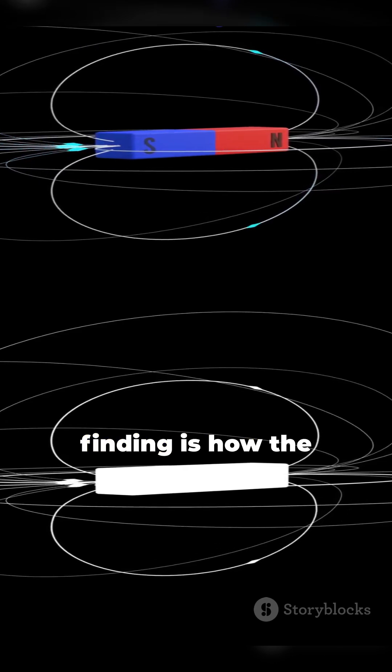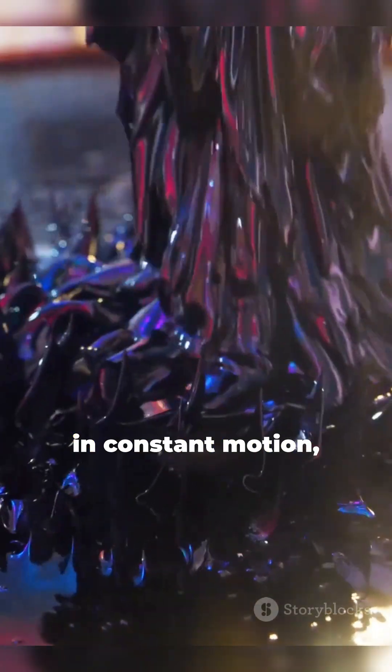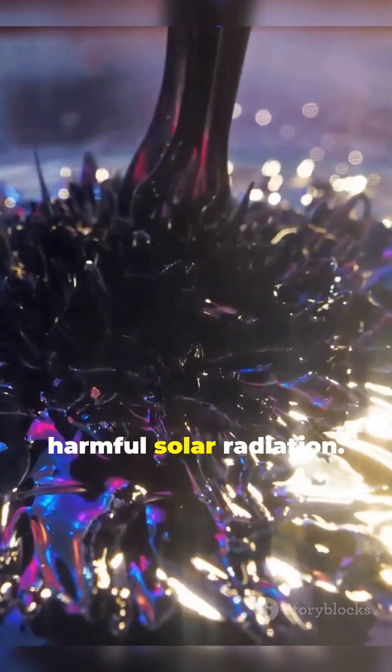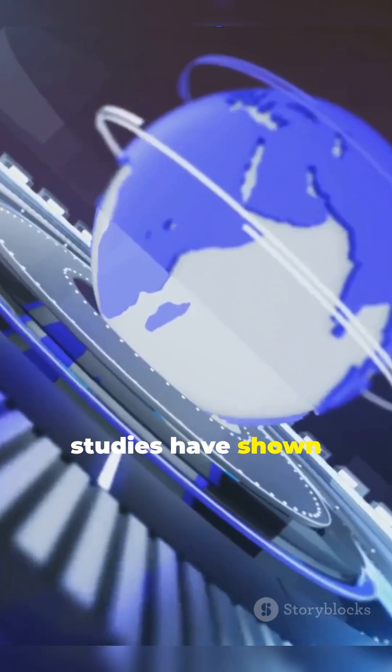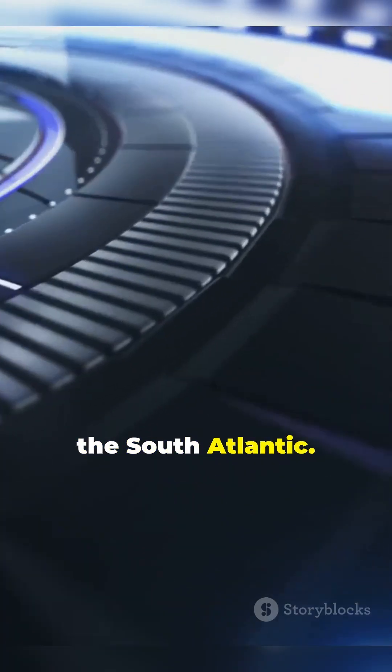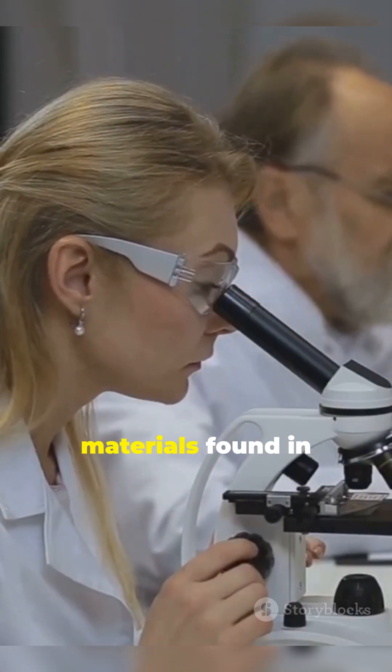Another groundbreaking finding is how the core impacts Earth's magnetic field. The liquid outer core, in constant motion, acts like a massive dynamo, generating the magnetic field that protects us from harmful solar radiation. However, studies have shown that the magnetic field is weakening in certain regions, particularly over the South Atlantic.